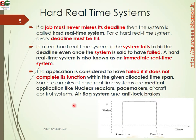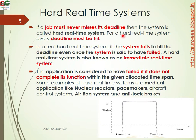What is a hard real-time system? If a job must never miss its deadline, the system is called a hard real-time system. For a hard real-time system, every deadline must be hit. Otherwise, the system will fail.